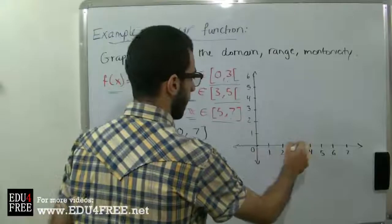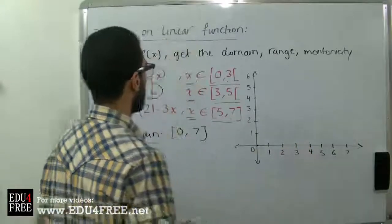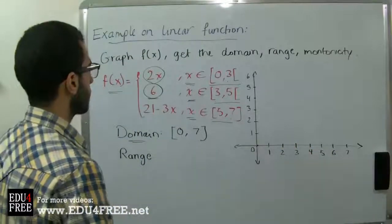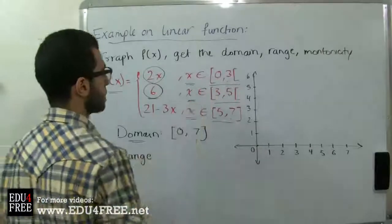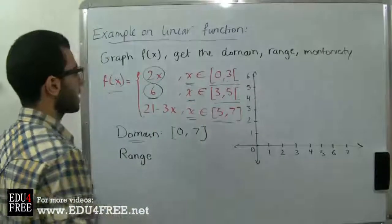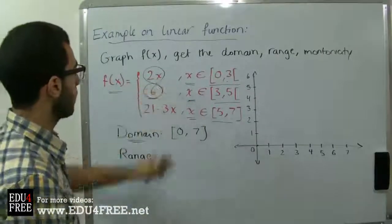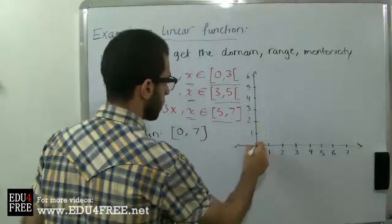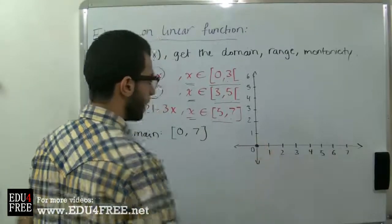Between 0 and 3, at x equals 0, f(x) equals 2 multiplied by 0 equals 0. So this is where our function begins.